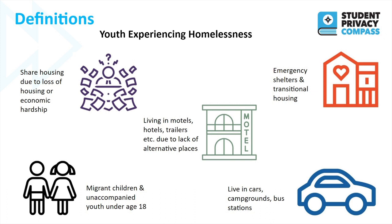Sometimes they may stay in cars, campgrounds, bus stations, or other public areas. Sometimes they may be migratory children or unaccompanied youth — youth who are living on their own in a homeless situation, separate from their parents or guardians.